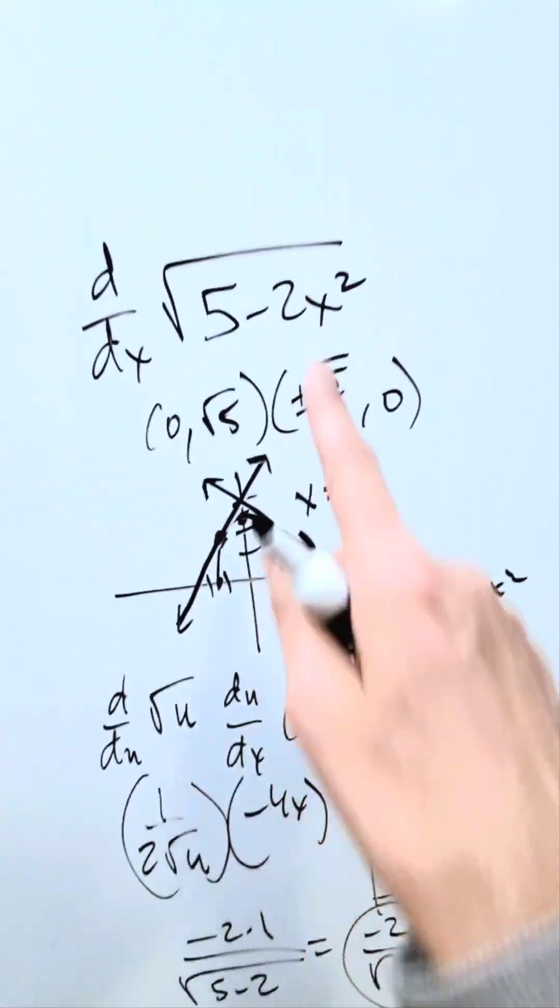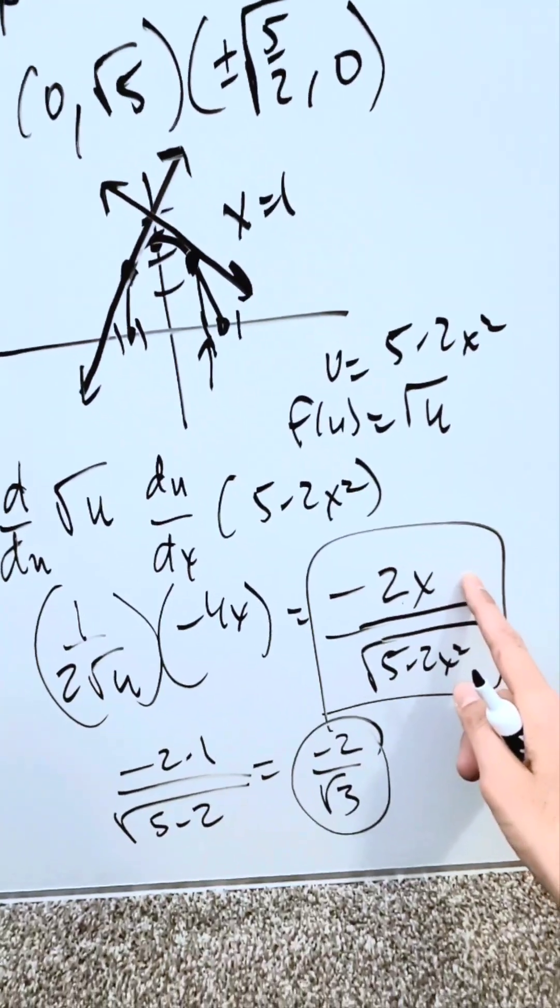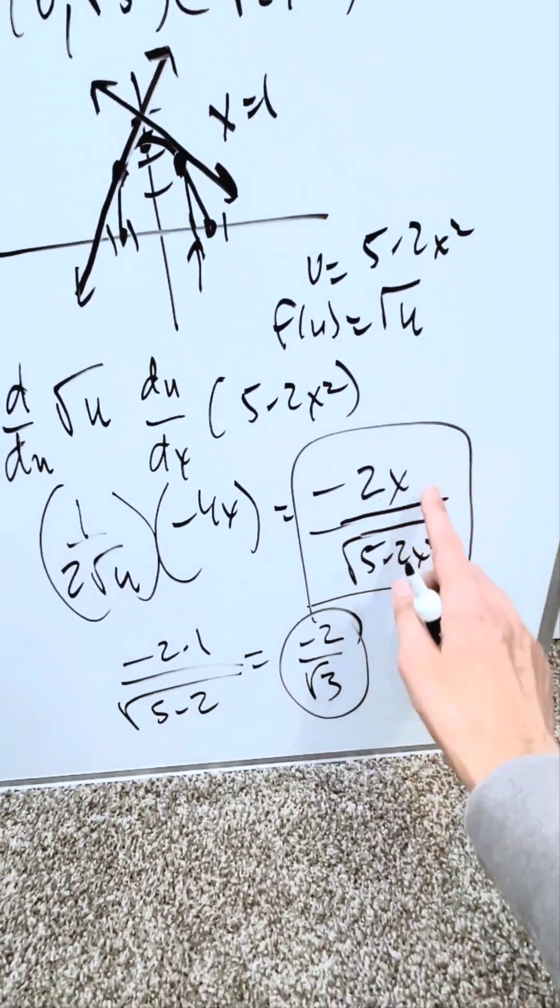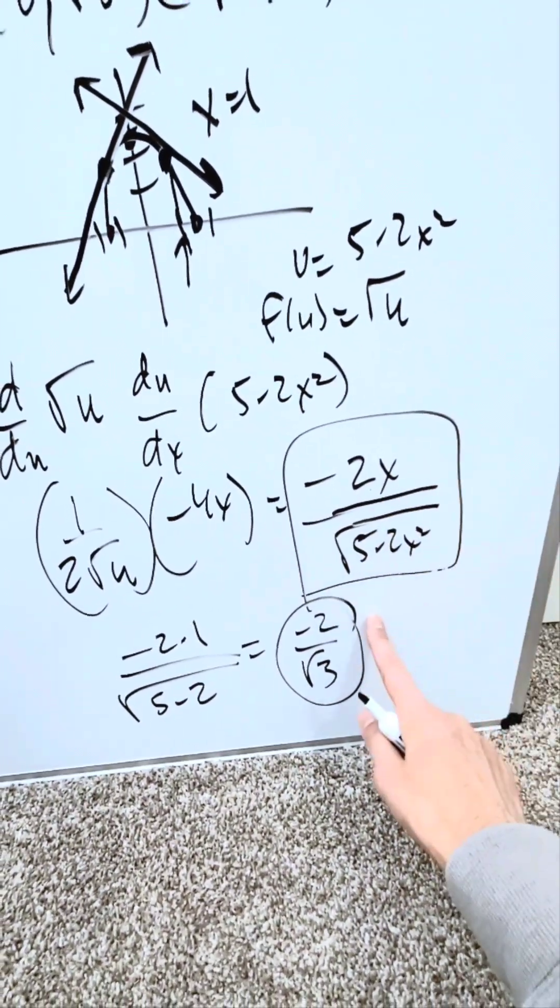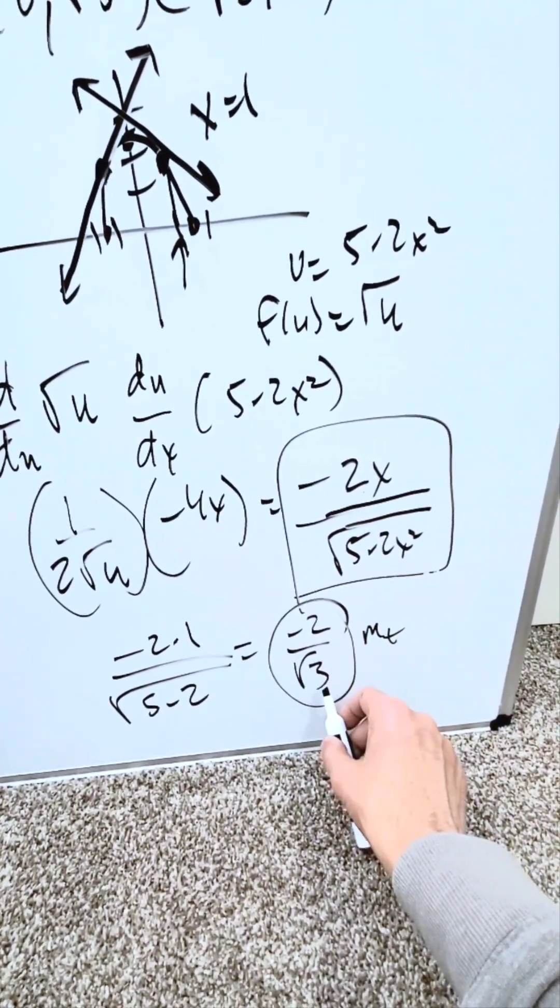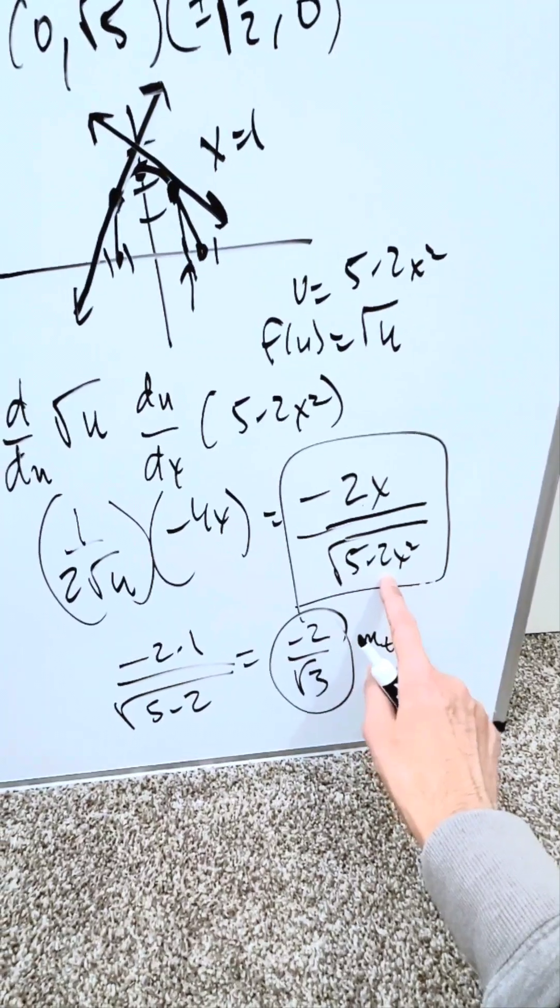When you're doing the derivative of a function, you'll normally arrive at a function. But that function will give you, based on the value of the variable involved, an actual numerical slope for the tangent line you've drawn. This is the tangent line. This is the derivative function, and it's correct.